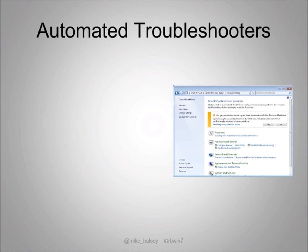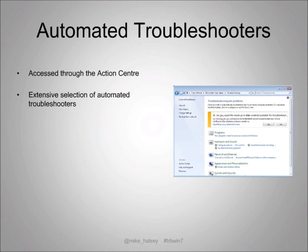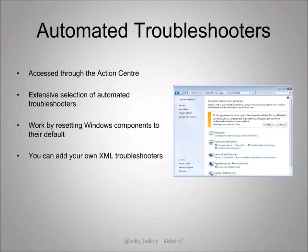These are new to Windows 7. You access them through the Action Center, which is the small up arrow in the bottom right of your Windows 7 taskbar. There's quite an extensive selection of automated troubleshooters. How they work is all they do is reset Windows components to their defaults. So let's say you're running a troubleshooter for your sound because you can't get your speakers or microphone to work — it will reset the default settings for that particular device type. An interesting thing, especially useful in enterprise, is that you can write your own troubleshooters if you're familiar with extensible markup language.